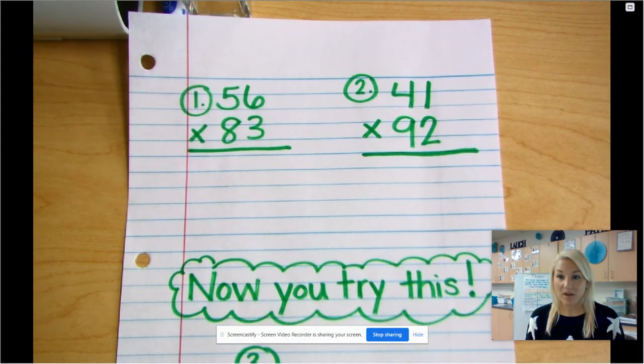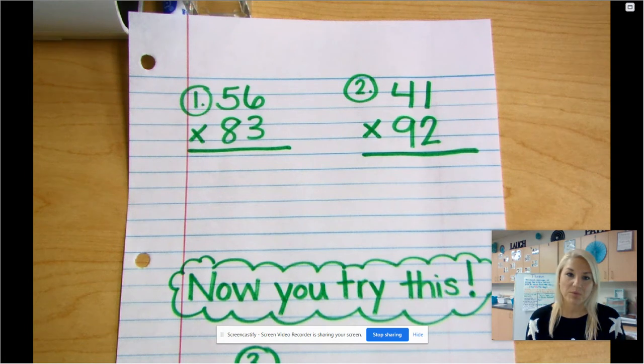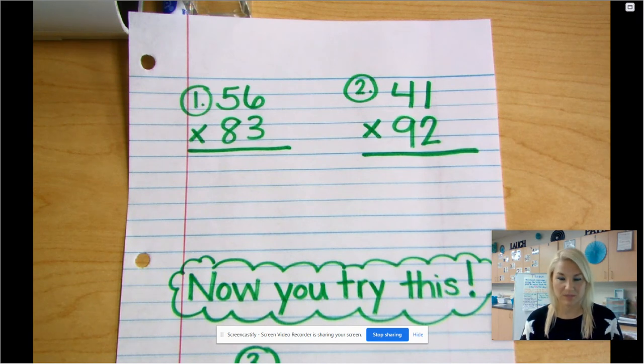Hi friends! Today you are here because you passed your three by one and four by one digit multiplication, and now you are ready to go on to two by two digit multiplication.